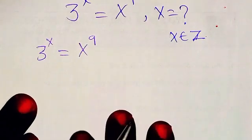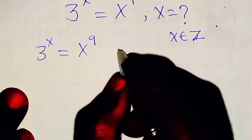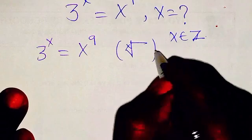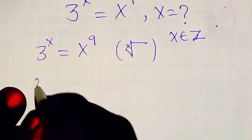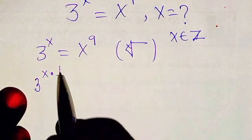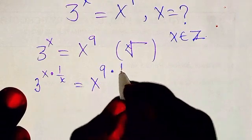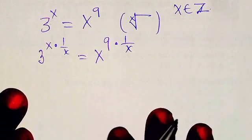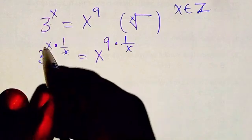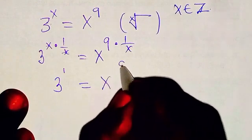What we are going to do is take the x-th root of both sides. Taking the x root of both sides means the exponent 3x changes to 3 to the power of 1 over x. Then we have x to the power 9 multiplied by 1 over x. Taking the x root of both sides, this cancels, and we have 3 to power 1 equals x to the power 9 over x.